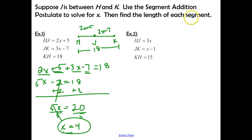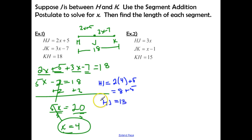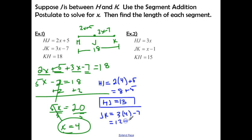Now find the length of each segment. KH is already 18. For HJ, substitute X = 4: 2(4) + 5 = 8 + 5 = 13. For JK: 3(4) − 7 = 12 − 7 = 5. Check using the segment addition postulate: 13 + 5 = 18. Correct!